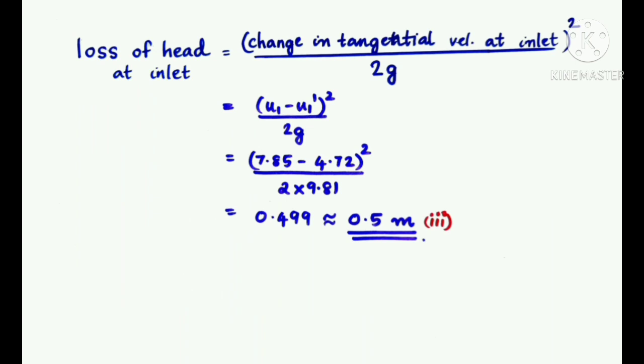Now, to find the loss of head at inlet, the formula is change in tangential velocity at inlet squared divided by 2g, which is equal to (U1 - U1')²/2g. Substituting the values, that is (7.85 - 4.72)² / (2 × 9.81) = 0.499 ≈ 0.5 m of water.